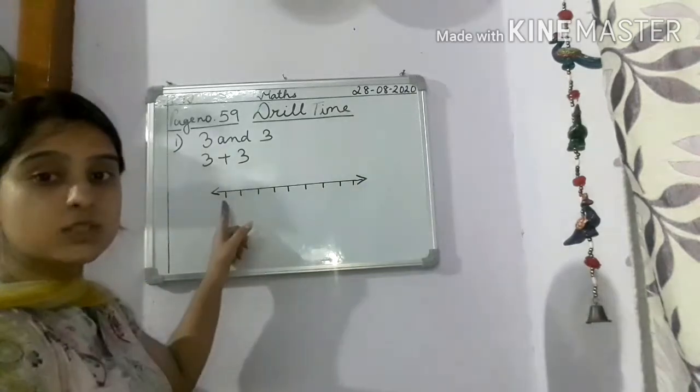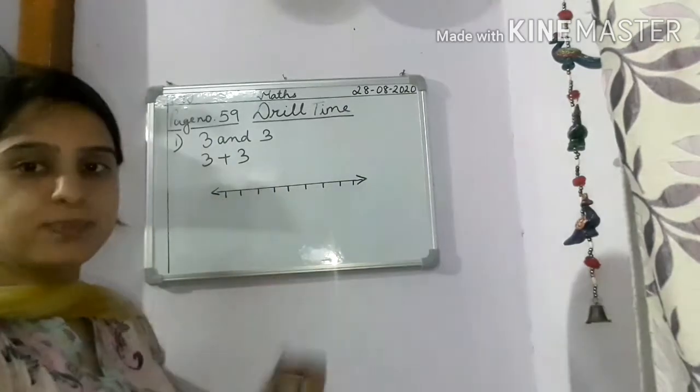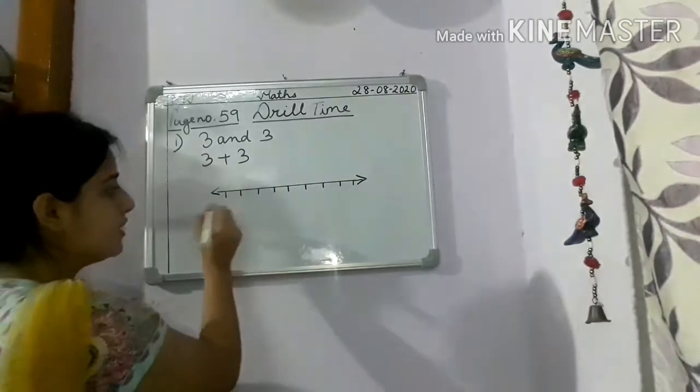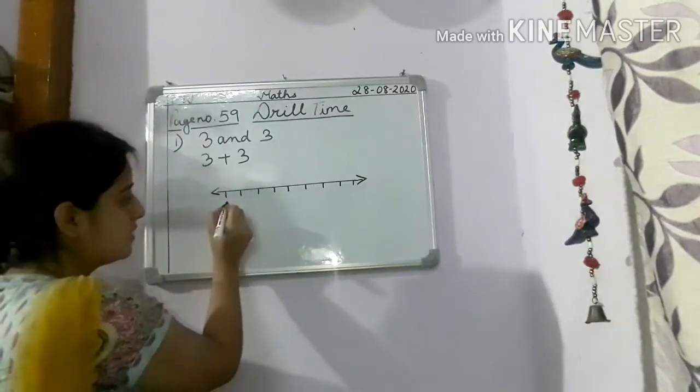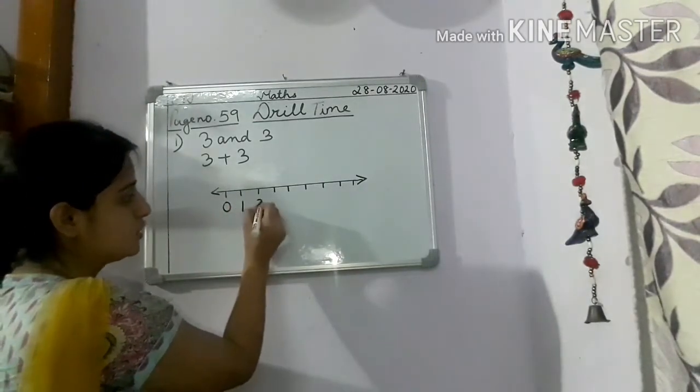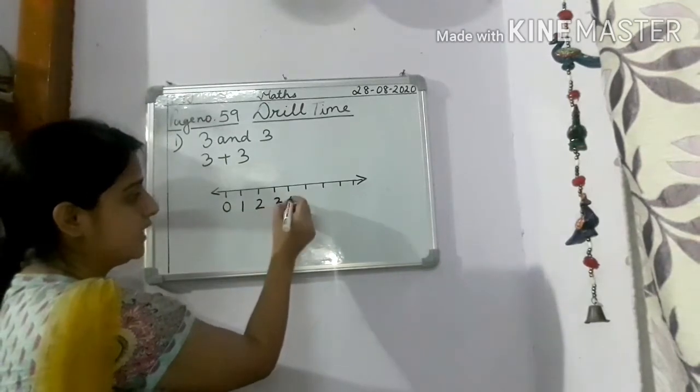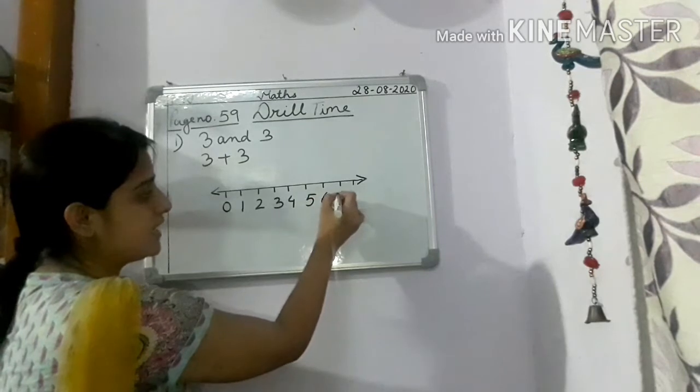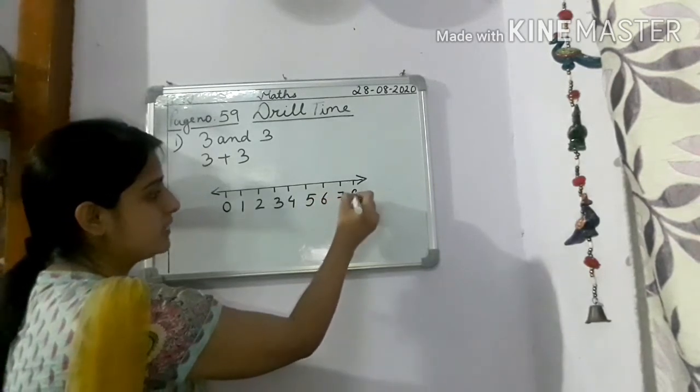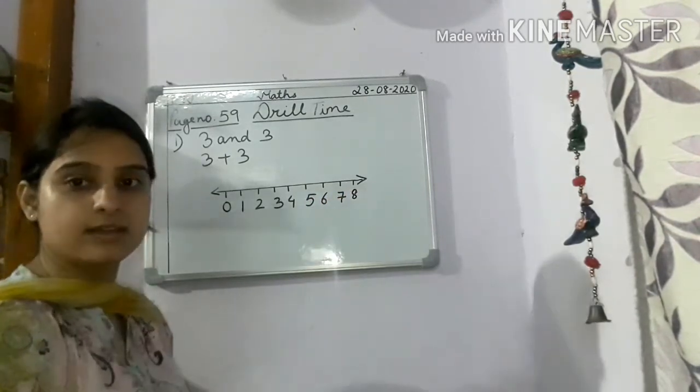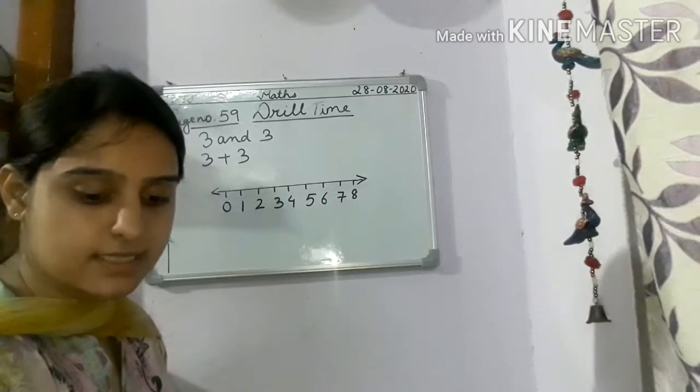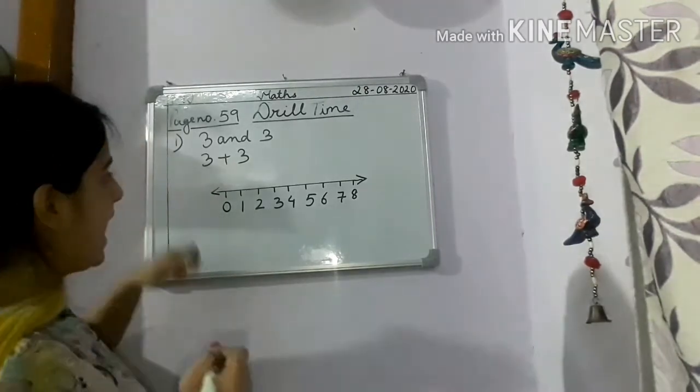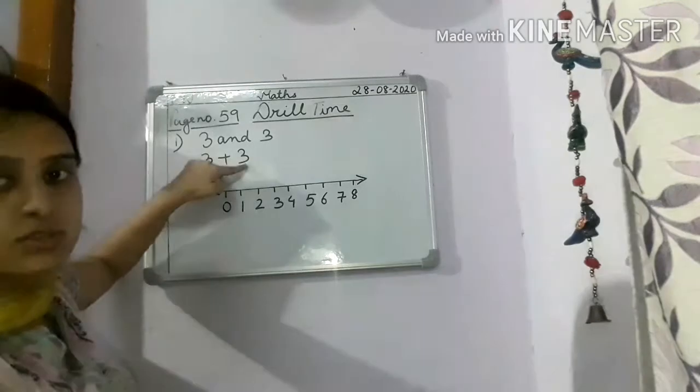This means you have given equal space. Now we will put numbers 0, 1, 2, 3, 4, 5, 6, 7, 8. So next, now what we will do? We will add 3 plus 3.